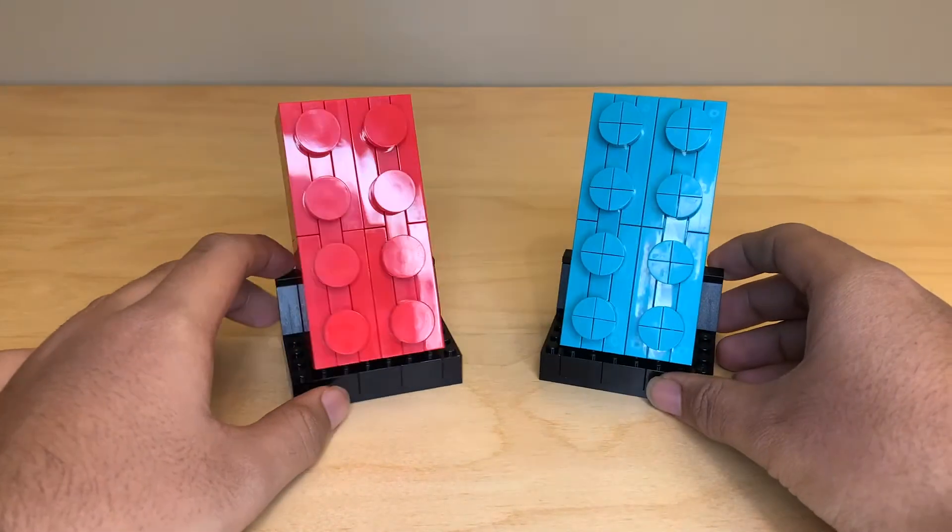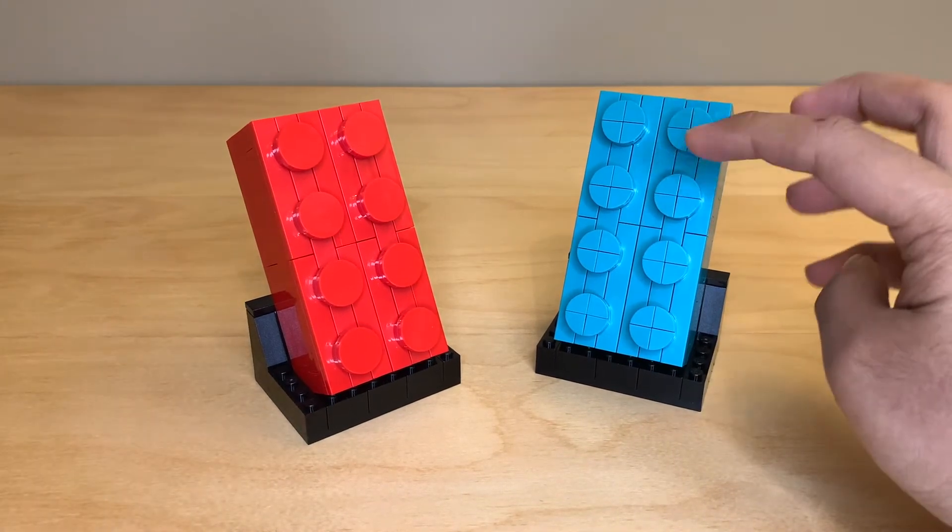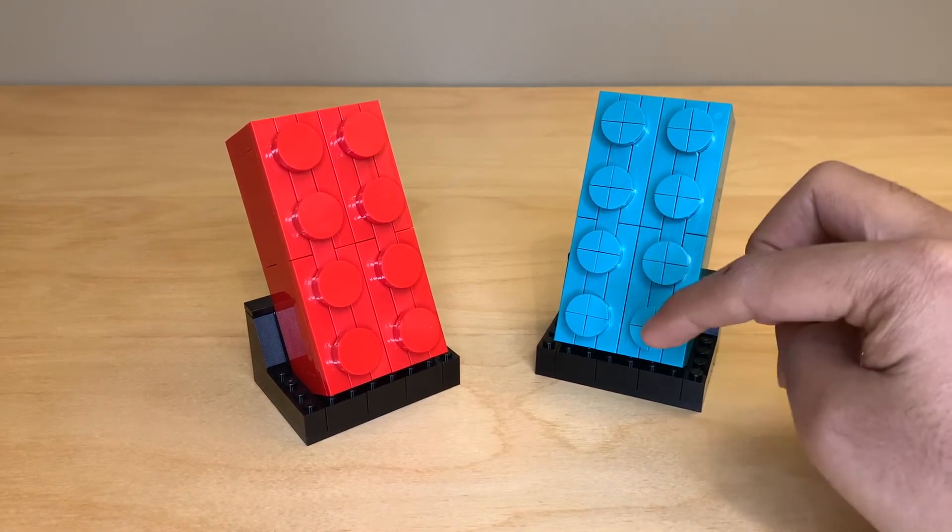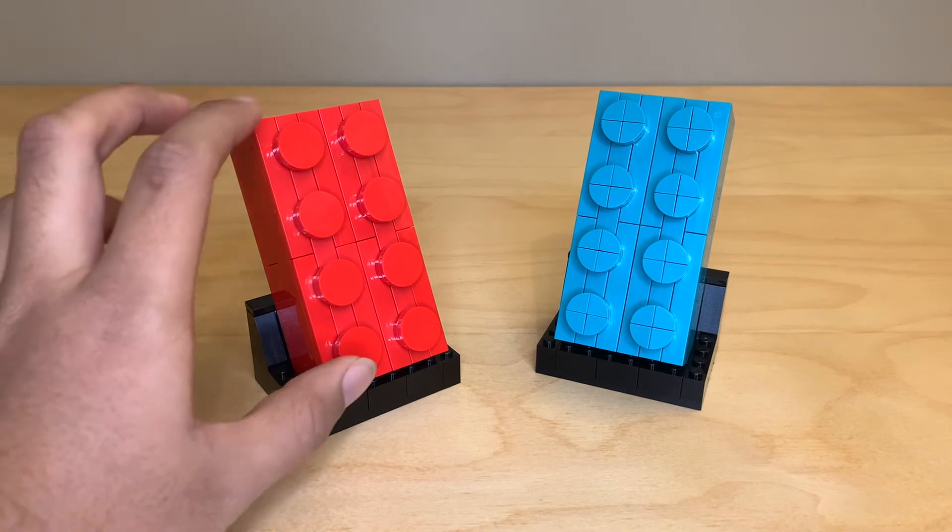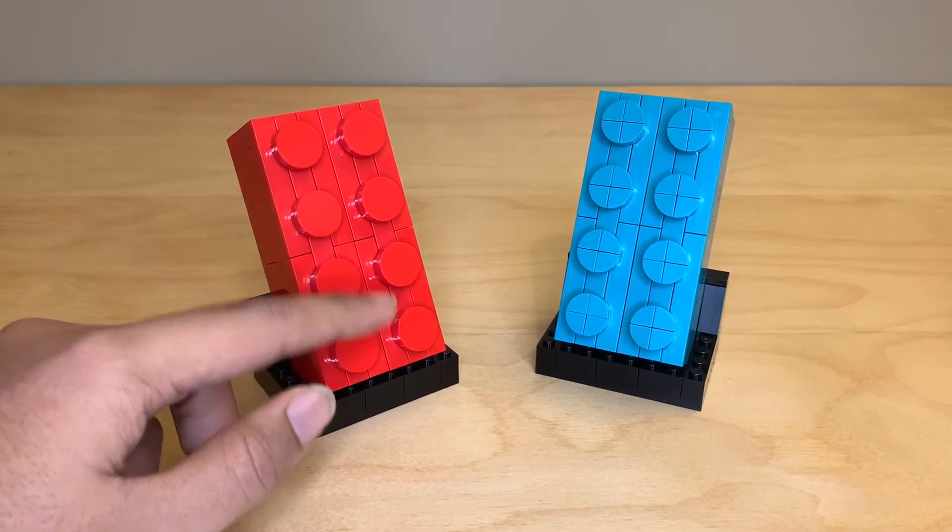The problem with using all of these little quarter circle tiles for me is that it ruins the look of the brick because it just has too many seams in it. Whereas this one looks much more plain and more like a LEGO brick, at least in my eyes.